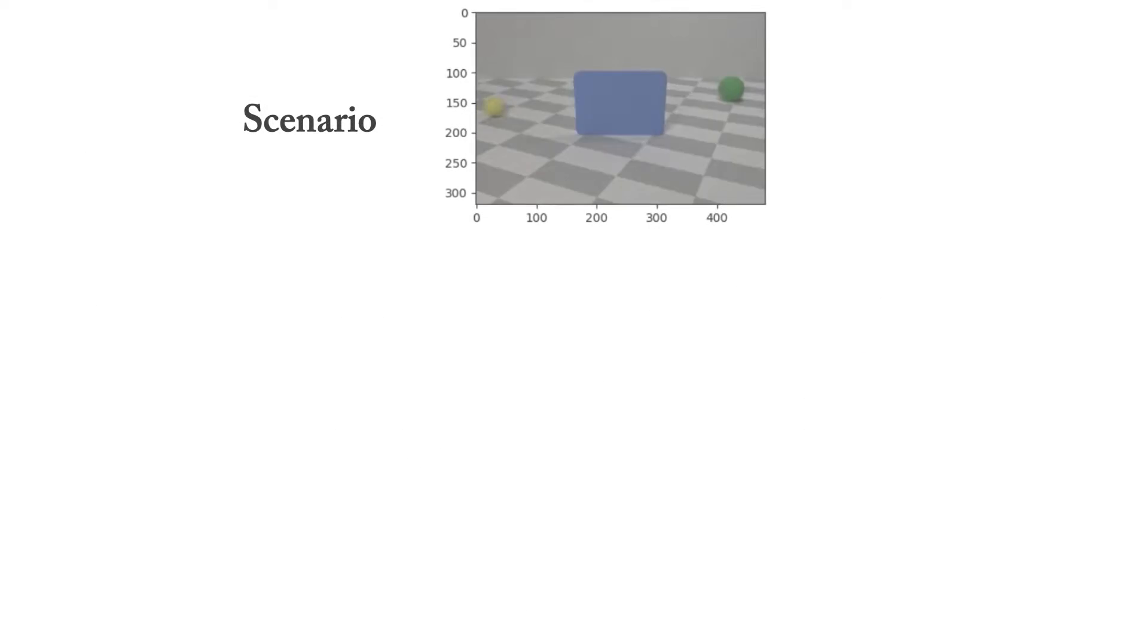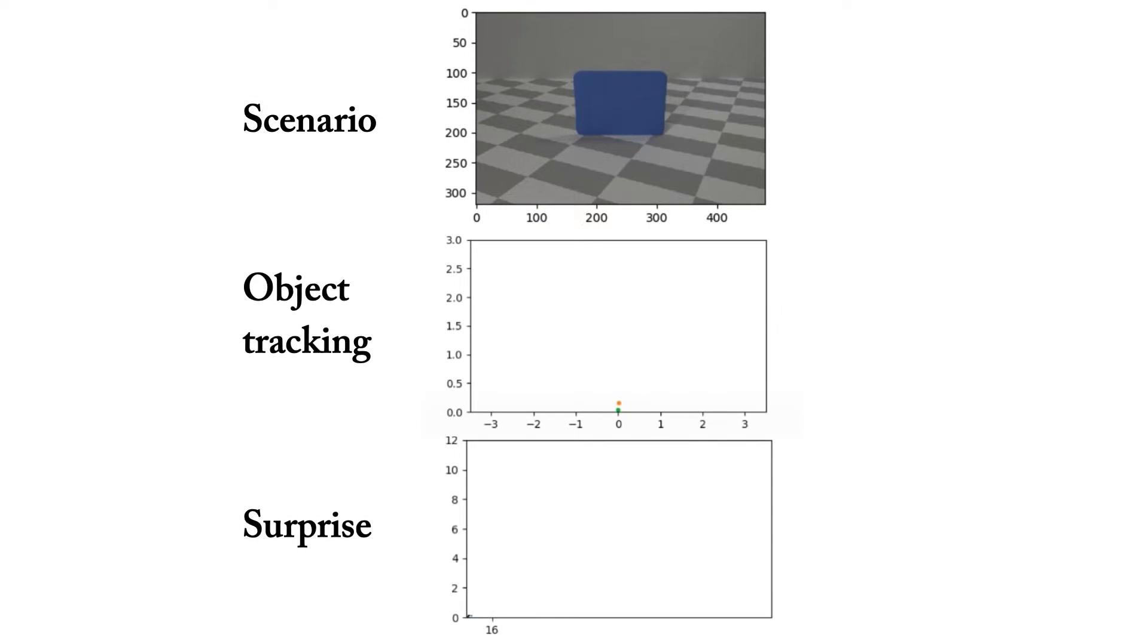Putting it all together, consider the following violation of permanence video, in which two objects enter but only one object leaves. The object tracking window shows the physics module's particle filter estimation for where the objects are. The yellow object is assumed to have stopped behind the screen, but then when the screen comes down, this event is registered as surprising.